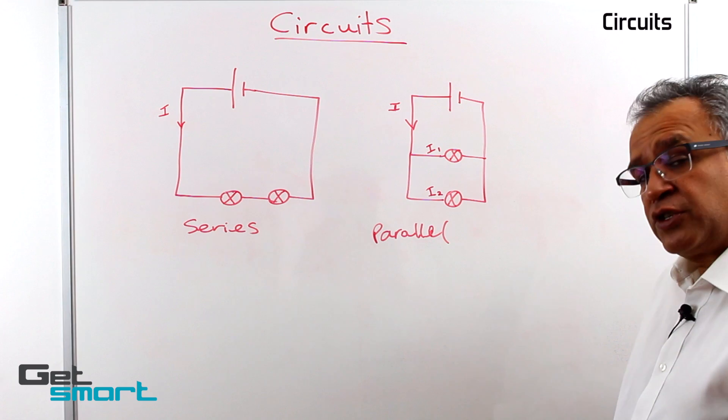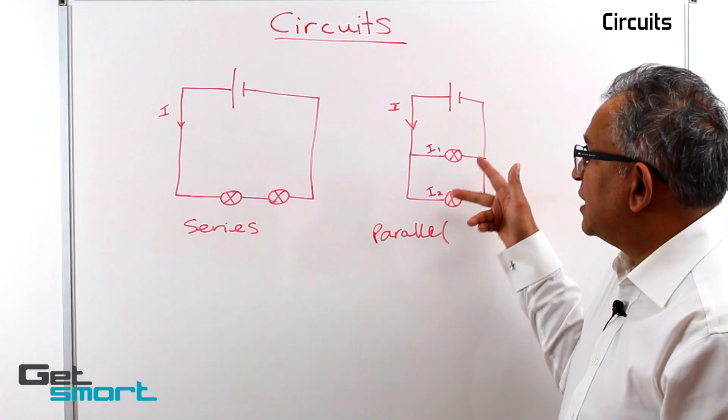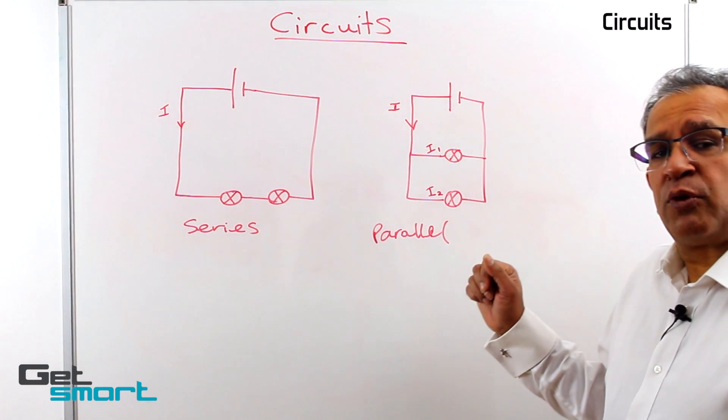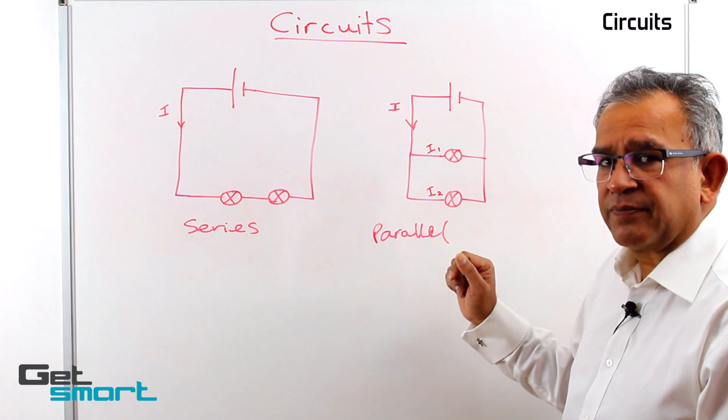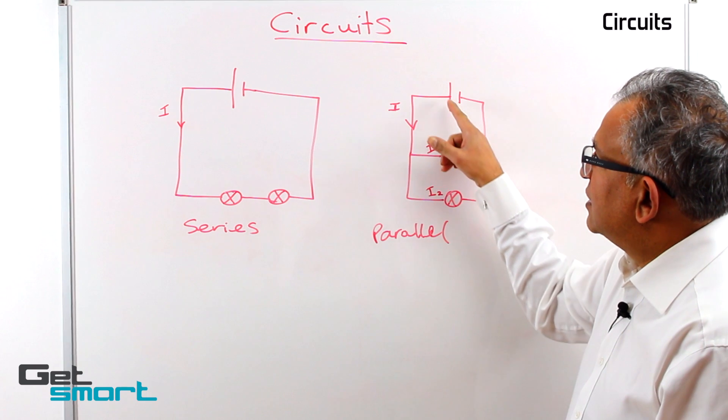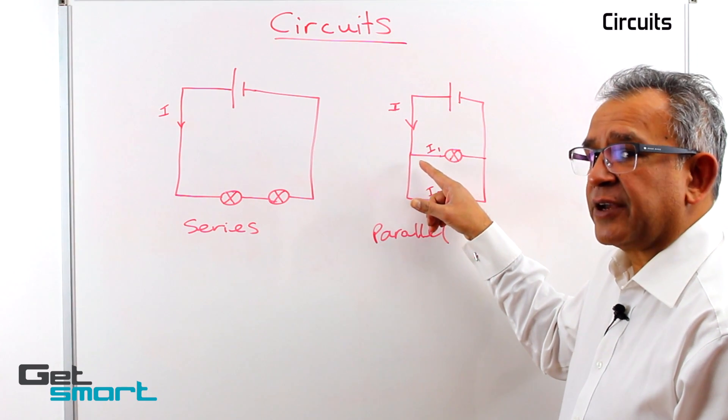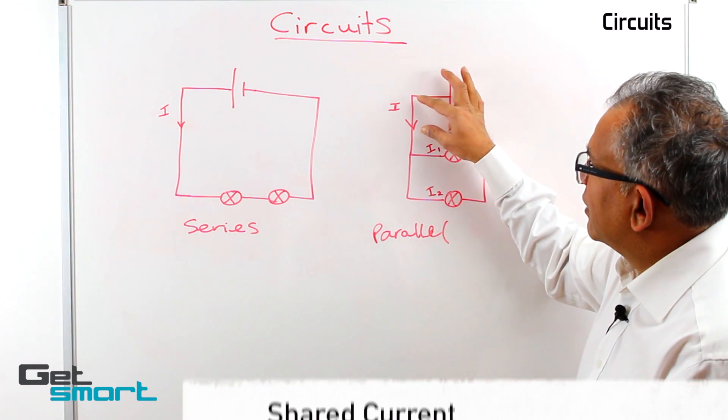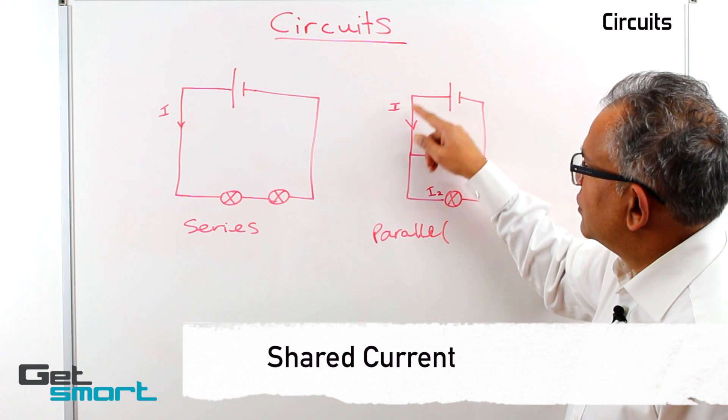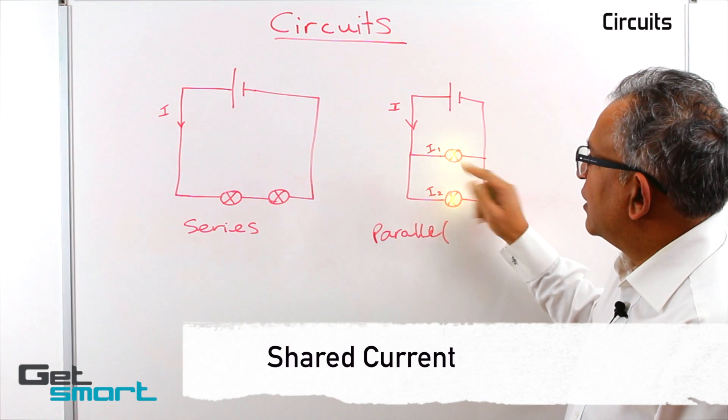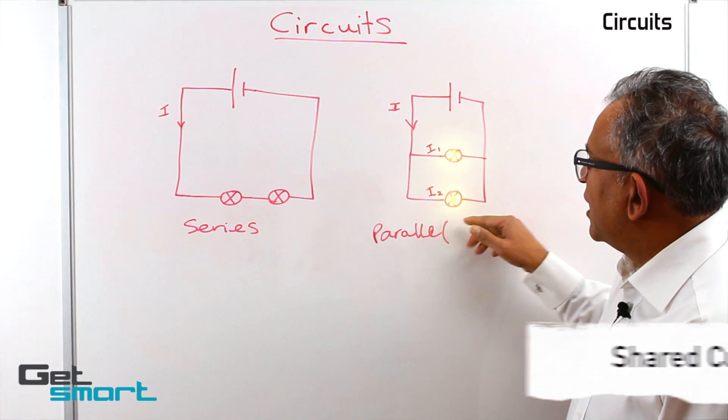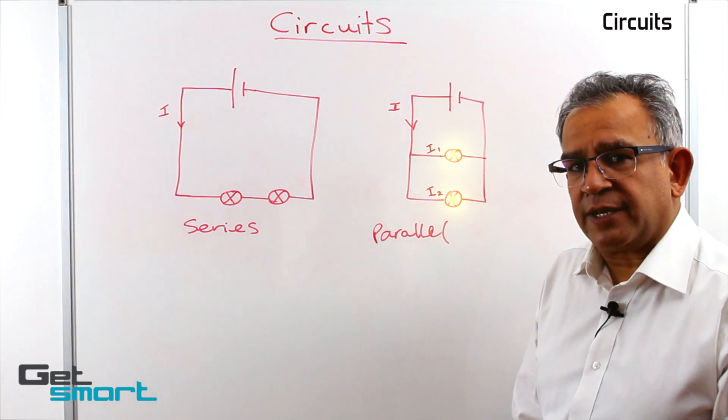So if we assume that the two bulbs are identical, then it is plausible to think that the current is split equally so that I1 and I2 will be the same. In this circuit the current is shared. So the current coming down from the positive side of the battery gets to this junction here. Some of it goes through there and some of it goes through there, and then it rejoins back again to make the circuit complete.